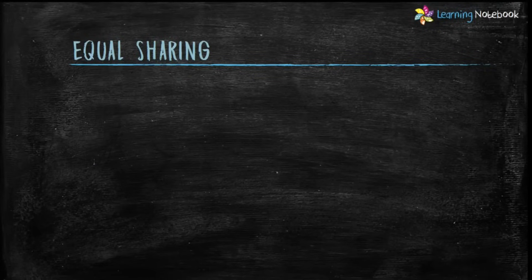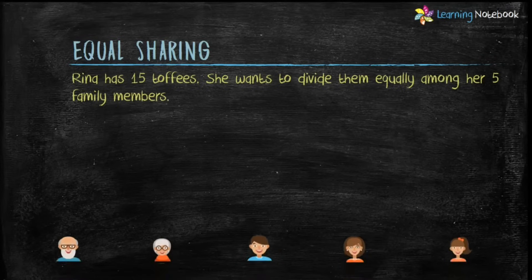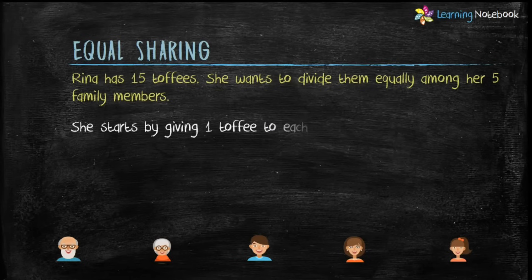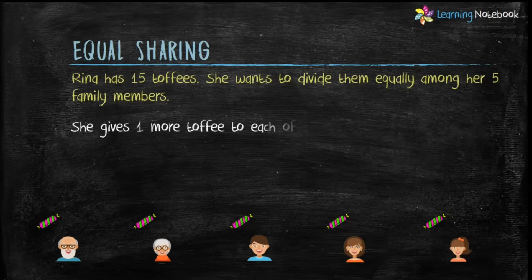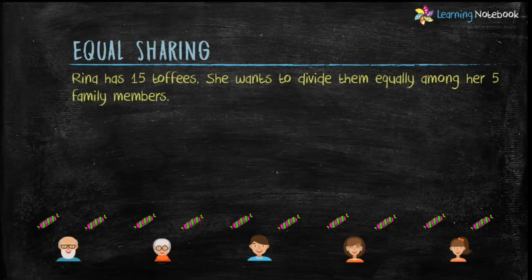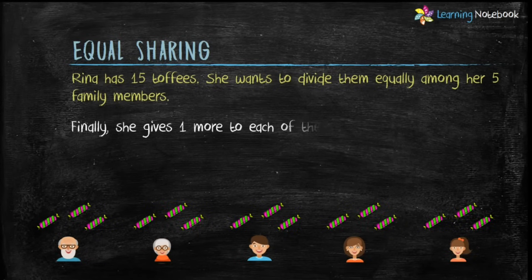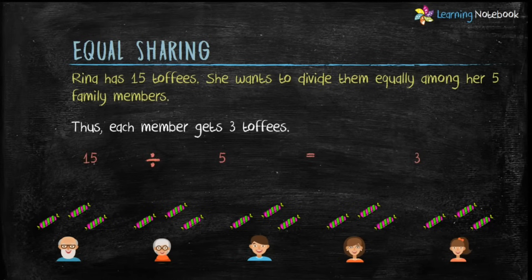Let's understand the concept of equal sharing first. Veena has 15 toffees. She wants to divide them equally among her 5 family members. She starts by giving 1 toffee to each of them, then 1 more toffee to each of them, and finally 1 more to each of them. Therefore, each member gets 3 toffees. So 15 divided by 5 equals 3.